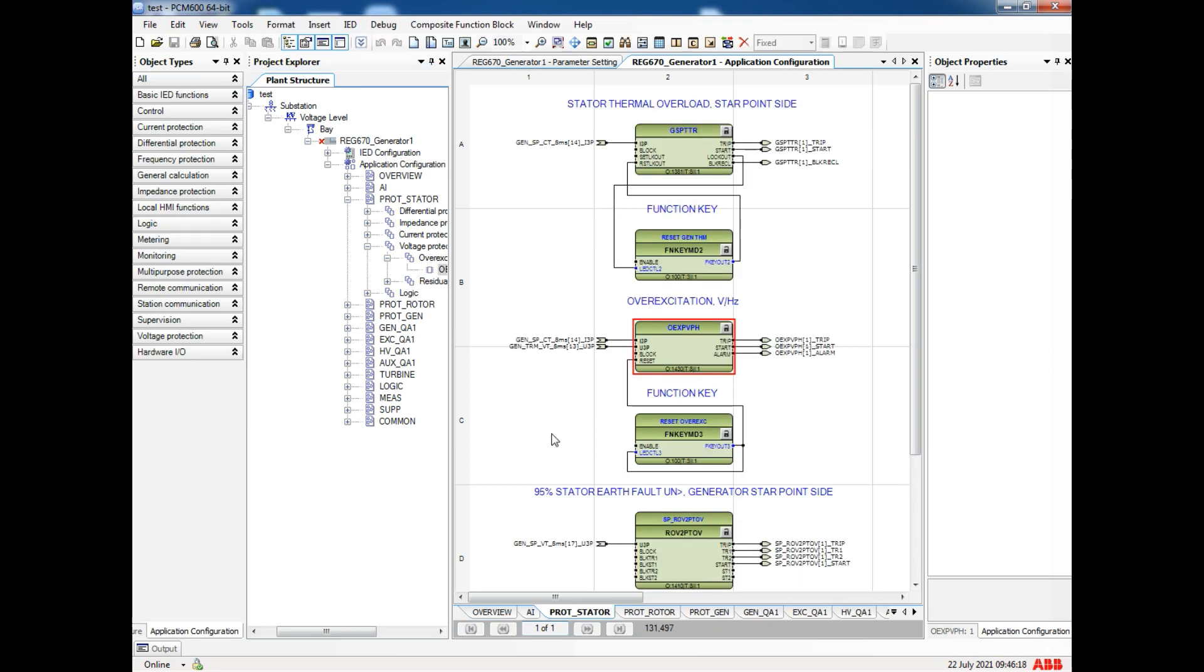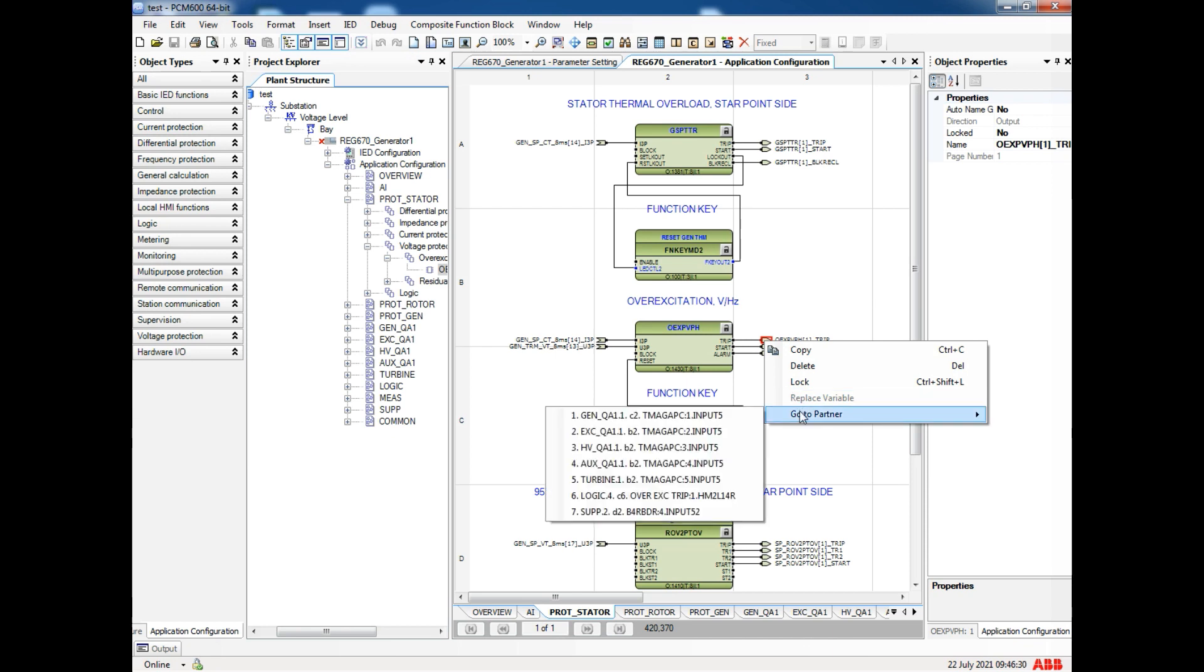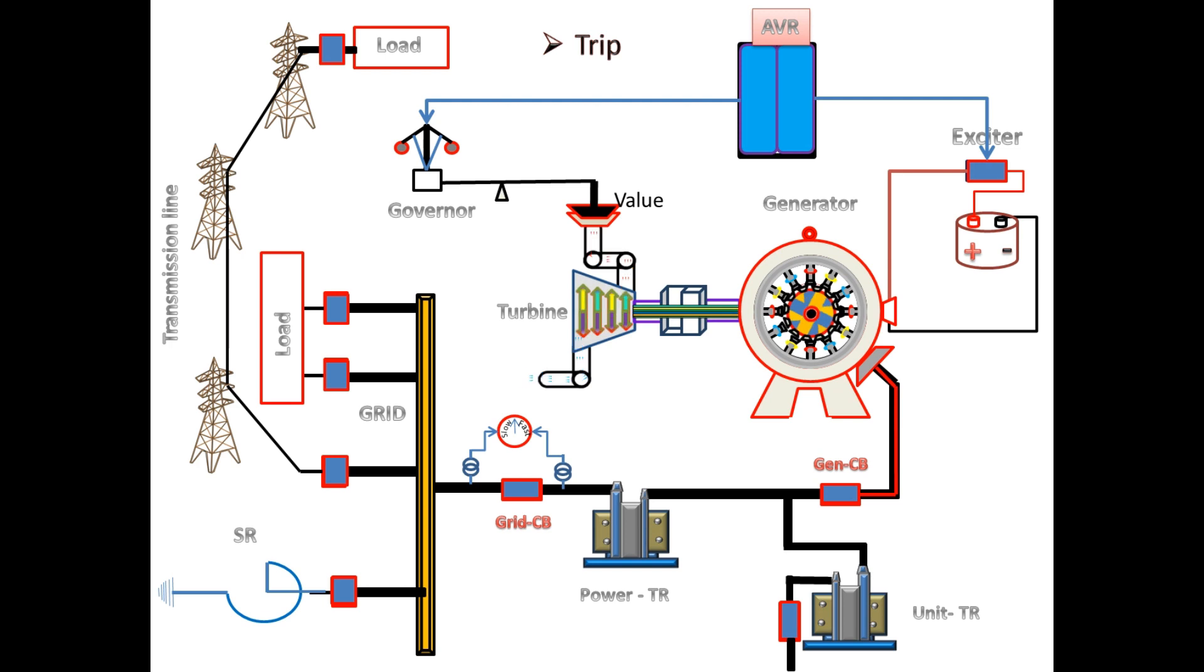For this over flux, we have to configure the relay to various CB tripping. The configuration of the relay I will make a separate video. Now we will follow the tripping. It has to trip turbine tripping, excitation CB, generator CB, unit transformer LV side, power transformer HV side.